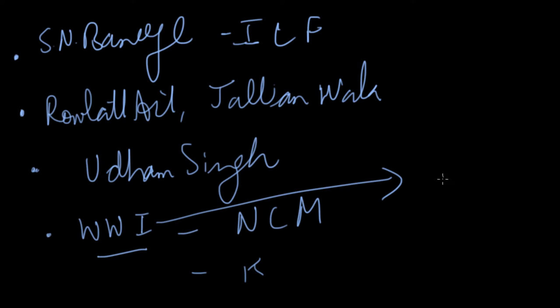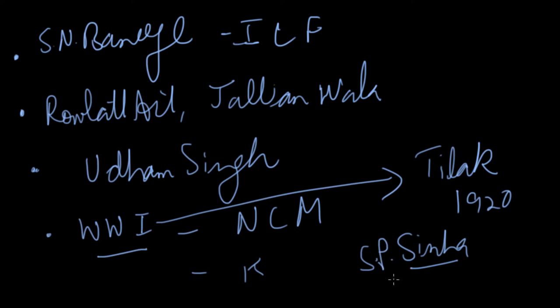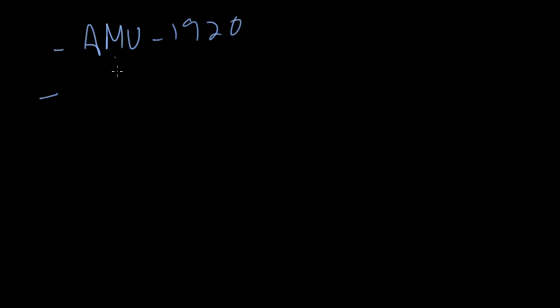With the deaths occurring during World War One, one important person of the Indian freedom struggle died — Tilak in 1920. S.P. Sinha is another important person here: he was the Governor of Bihar and was the first Indian to be governor of any province — that is why this is important. The era of Chelmsford is particularly known for education: Aligarh Muslim University came up in 1920.